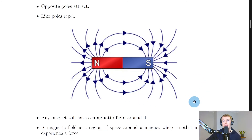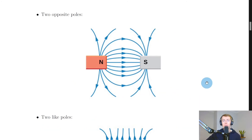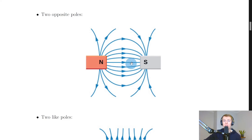It's also worth looking at the magnetic field patterns for two opposite poles and two like poles. For a north pole close to a south pole, the field lines go out of north and into south — there's this attraction, shown by a straight line in the middle. The lines then curve around either side, and further away they start breaking off into the individual field lines for the north and south poles.